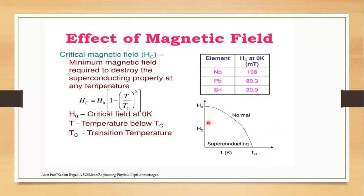Graphically, H0 is the critical field at zero Kelvin. T is the temperature below Tc, the critical temperature. Tc is also called the transition temperature. The formula is: Hc = H0 × [1 − (T/Tc)²]. That is the formula for the critical magnetic field.